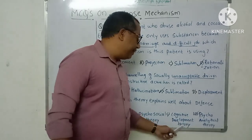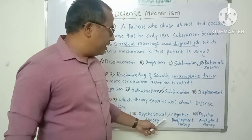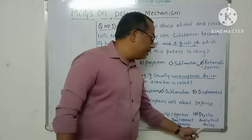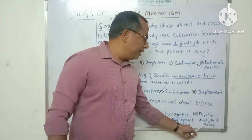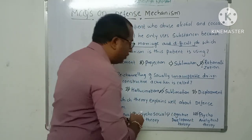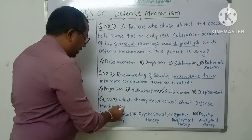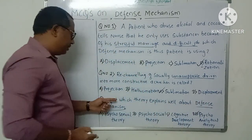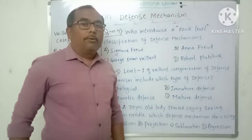The cognitive development theory is explained by Jean Piaget and explains about the cognitive development of human beings. The psychoanalytical theory is again explained by Sigmund Freud and explains about human behavior. This is the theory which tells us about defense mechanisms. So the theory that explains defense mechanisms is the psychoanalytical theory.